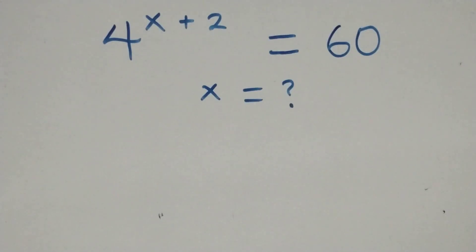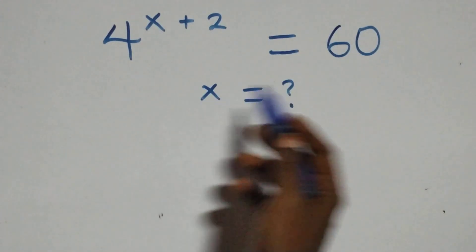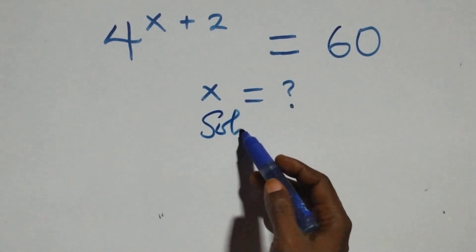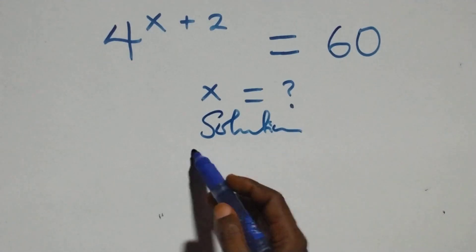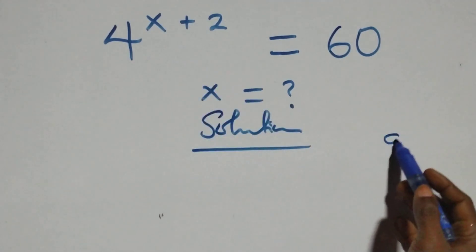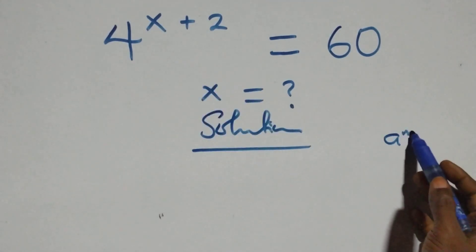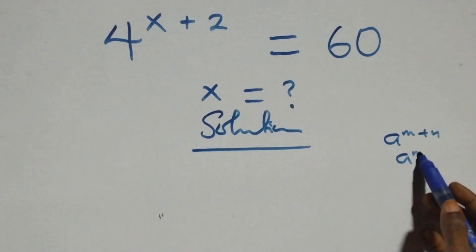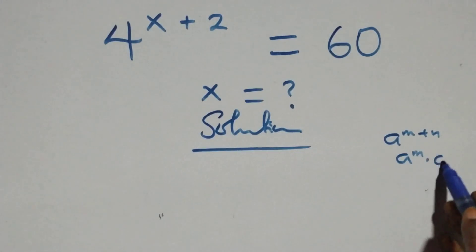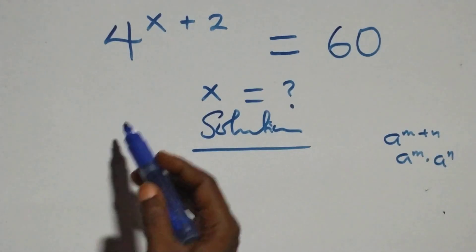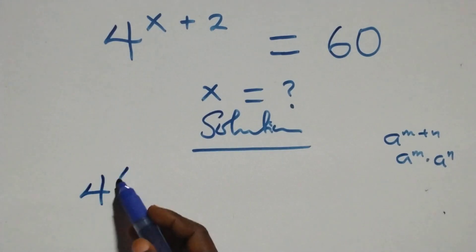Hello, you're welcome. How to solve this nice exponential equation. From here, we have a raised to power n plus n, which is the same thing as a raised to power n times a raised to power n. And here we have 4 raised to power x times 4 squared equals 60 on this side.